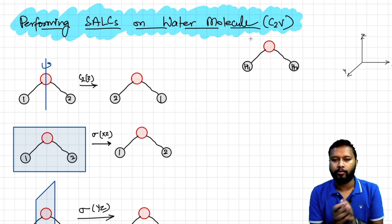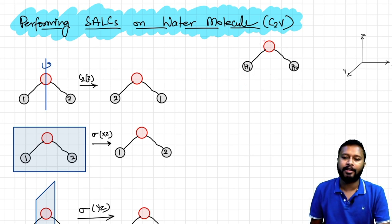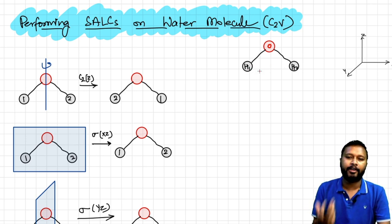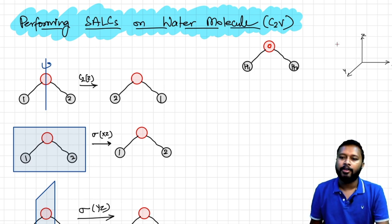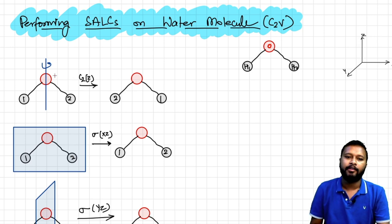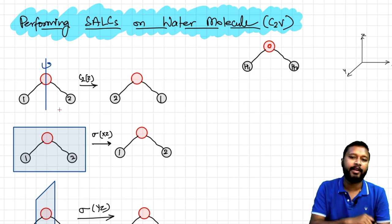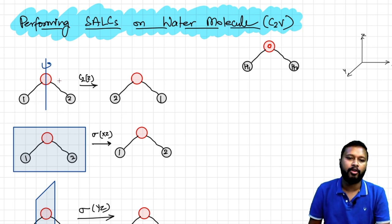We'll start with the water molecule because we already know its symmetry, stretching, and vibrations. The water molecule has the point group C2v. In my diagram, the oxygen is at the center and the two hydrogens are labeled H1 and H2. The x-axis is horizontal, z-axis is vertical, and the y-axis goes into the screen. I've set up the three-axis system so you can understand which axis I'm rotating through or which plane I'm applying.